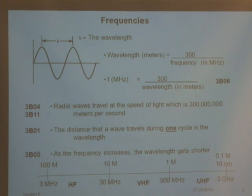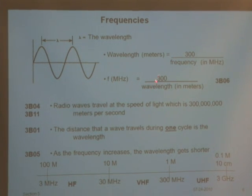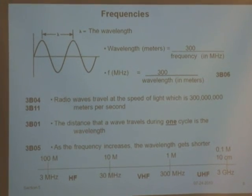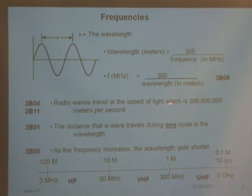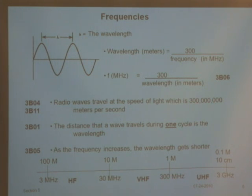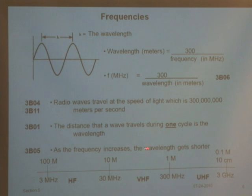The wavelength in meters is 300 divided by the frequency in megahertz. Radio waves travel at the speed of light, which is 300 million meters per second. The distance that a wave travels during one cycle is its wavelength. As the frequency increases — as that number gets bigger — the wavelength gets shorter. So as I go higher and higher in frequency, that wave becomes shorter and shorter.